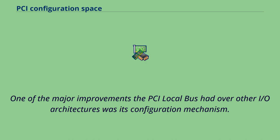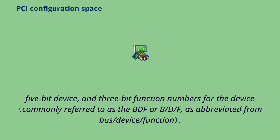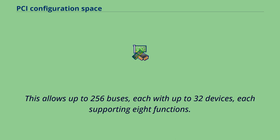One of the major improvements the PCI local bus had over other I/O architectures was its configuration mechanism. In addition to the normal memory-mapped and I/O port spaces, each device function on the bus has a configuration space which is 256 bytes long, addressable by knowing the 8-bit PCI bus, 5-bit device, and 3-bit function numbers. This allows up to 256 buses, each with up to 32 devices, each supporting 8 functions.